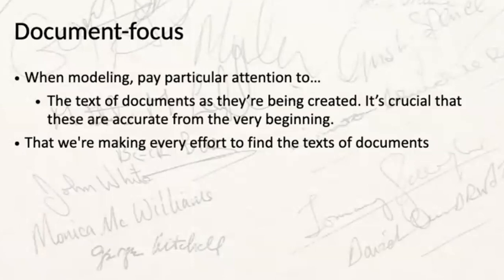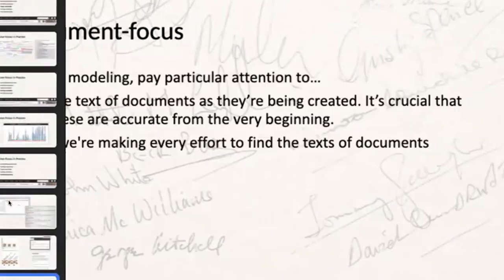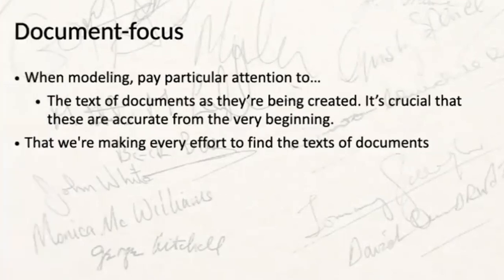This leads us to our document focus. It's really easy to think about a Quill timeline as a number of boxes to tick off, and it's easy to get tied up filling those boxes and lose sight of the big picture. Ideally, modeling in Quill is a constant back and forth between the big picture and the nitty-gritty — and that is nowhere more important than in our modeling of documents. Quill is all about the document — the negotiated text, how it's written, amended, and debated to arrive at its final iteration.